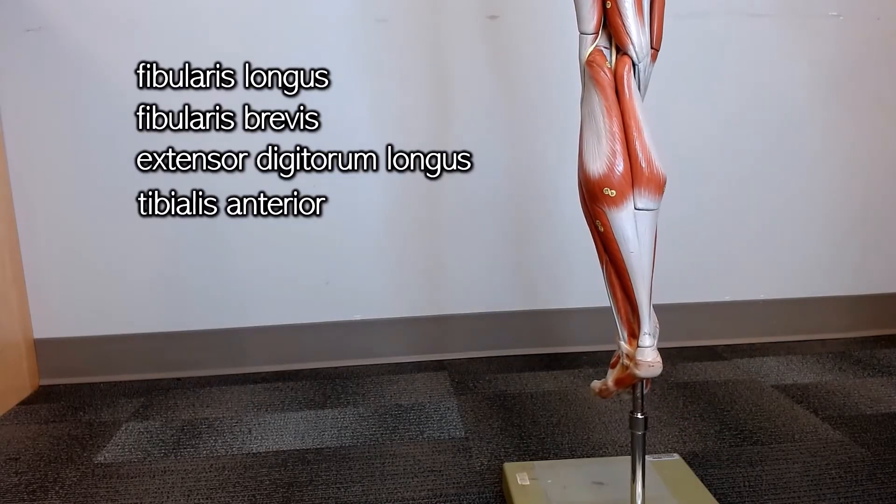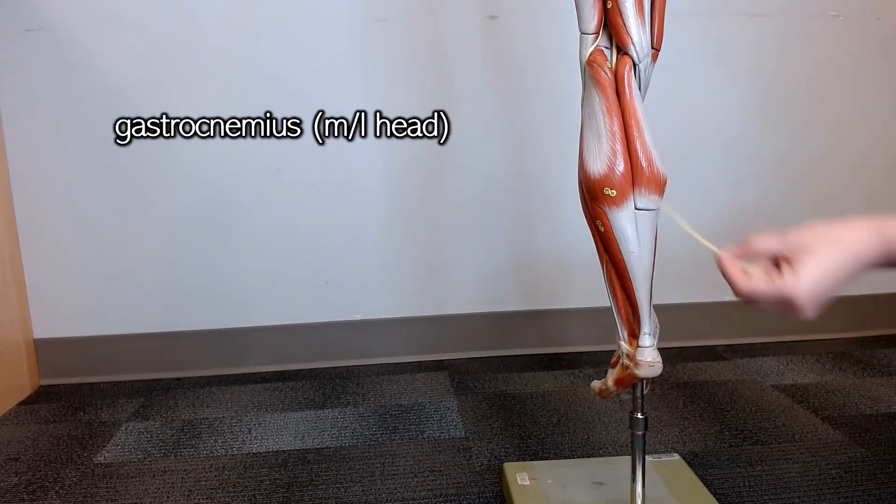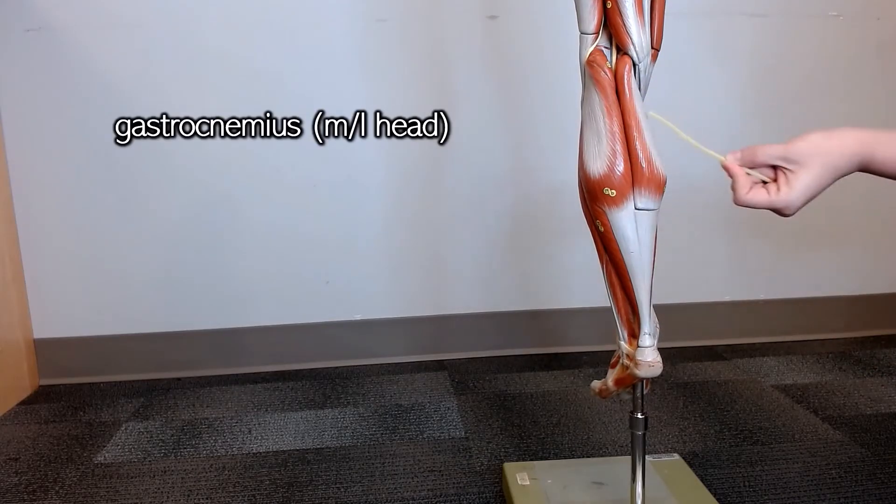Looking at the posterior side of your leg, you have this very large muscle, which is the gastrocnemius. There's a lateral head and a medial head.